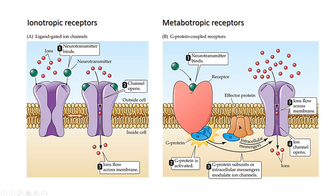We see some differences between these two types of receptors, but ultimately they both affect the excitability of the postsynaptic membrane. In the case of ligand-gated ion channels, the effect on the membrane potential of the postsynaptic cell is relatively quick, whereas in the case of metabotropic receptors, the change in the membrane potential will take longer because it requires many steps for the ion channel to be activated.